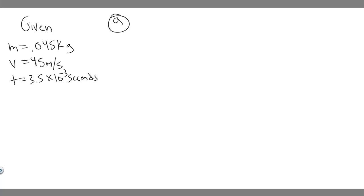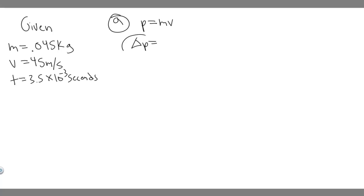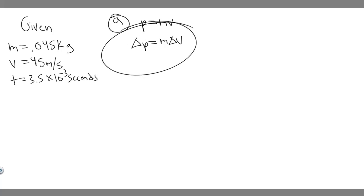So let's start with A. Part A wants us to find the impulse imparted to the ball. When they mean impulse, essentially what they're asking for is the change in momentum. We know that momentum P is equal to MV — mass times velocity. But they're talking about the change in momentum. If we assume the mass is constant, then delta P, the change in momentum, is equal to M times the change in velocity. That's the formula we need.